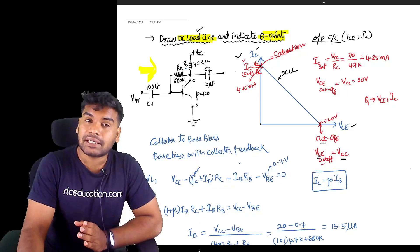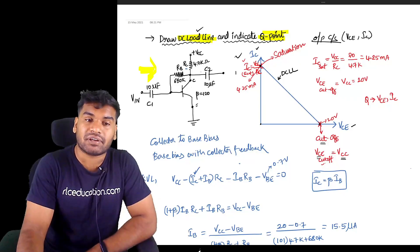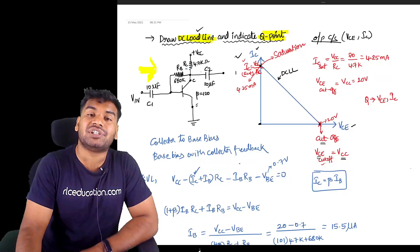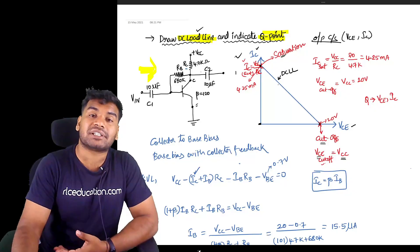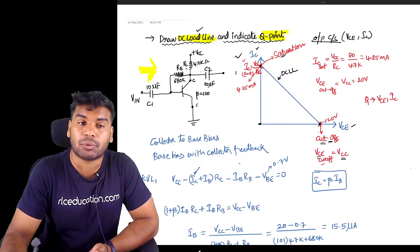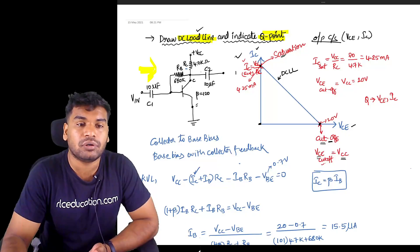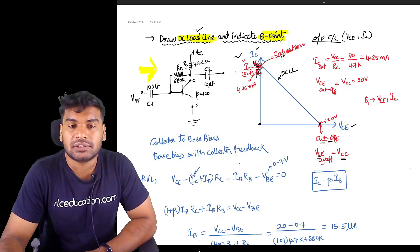Next, this point on the current axis - what is that value of current? That current is called saturation current. Why? Because current is there but voltage at that point is zero. So you call that region of operation saturation mode, and this is cutoff mode. That value of saturation current IC_sat will be equal to VCC by RC.